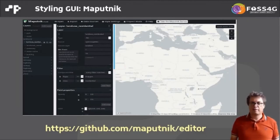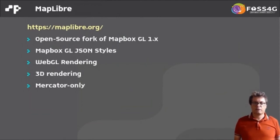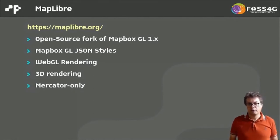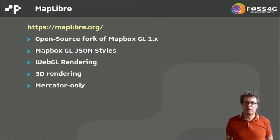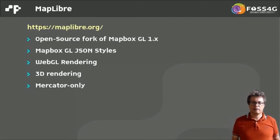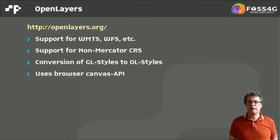For rendering these styled maps, there is MapBox GL and its fork MapLibre, which forked the last open-source version of MapBox GL. It supports GL JSON styles, does rendering in a WebGL context, supports the 3D functionality of MapBox, and is currently Mercator only.